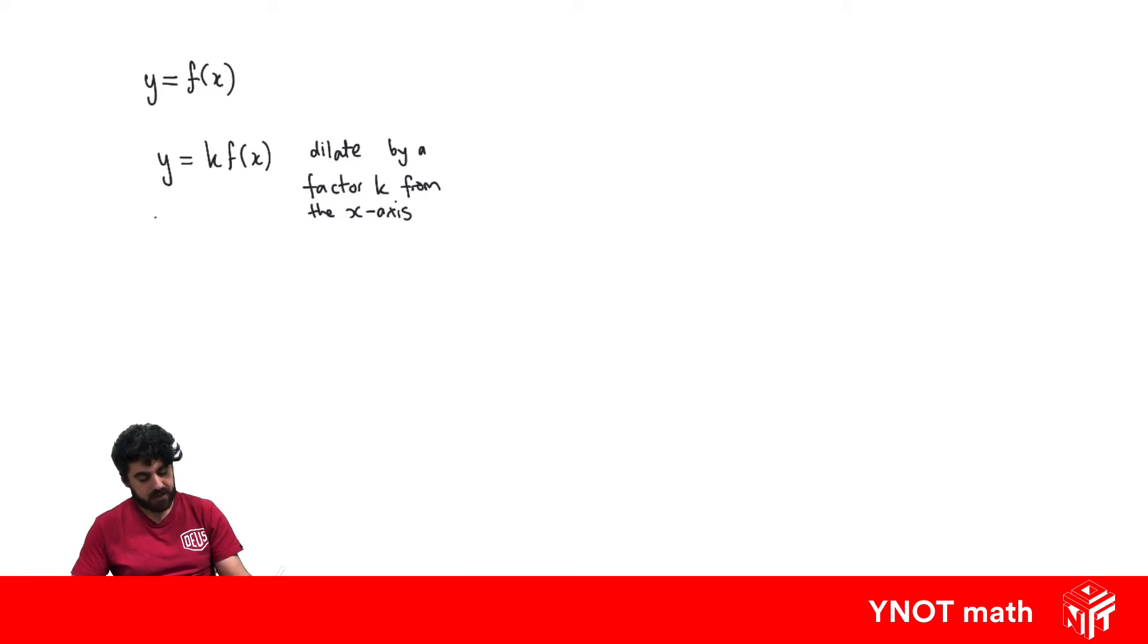This will actually be the same thing if we've already shifted the graph along the x-axis. If we have it in the form f of x plus b all times a factor of k, it still has the same effect.